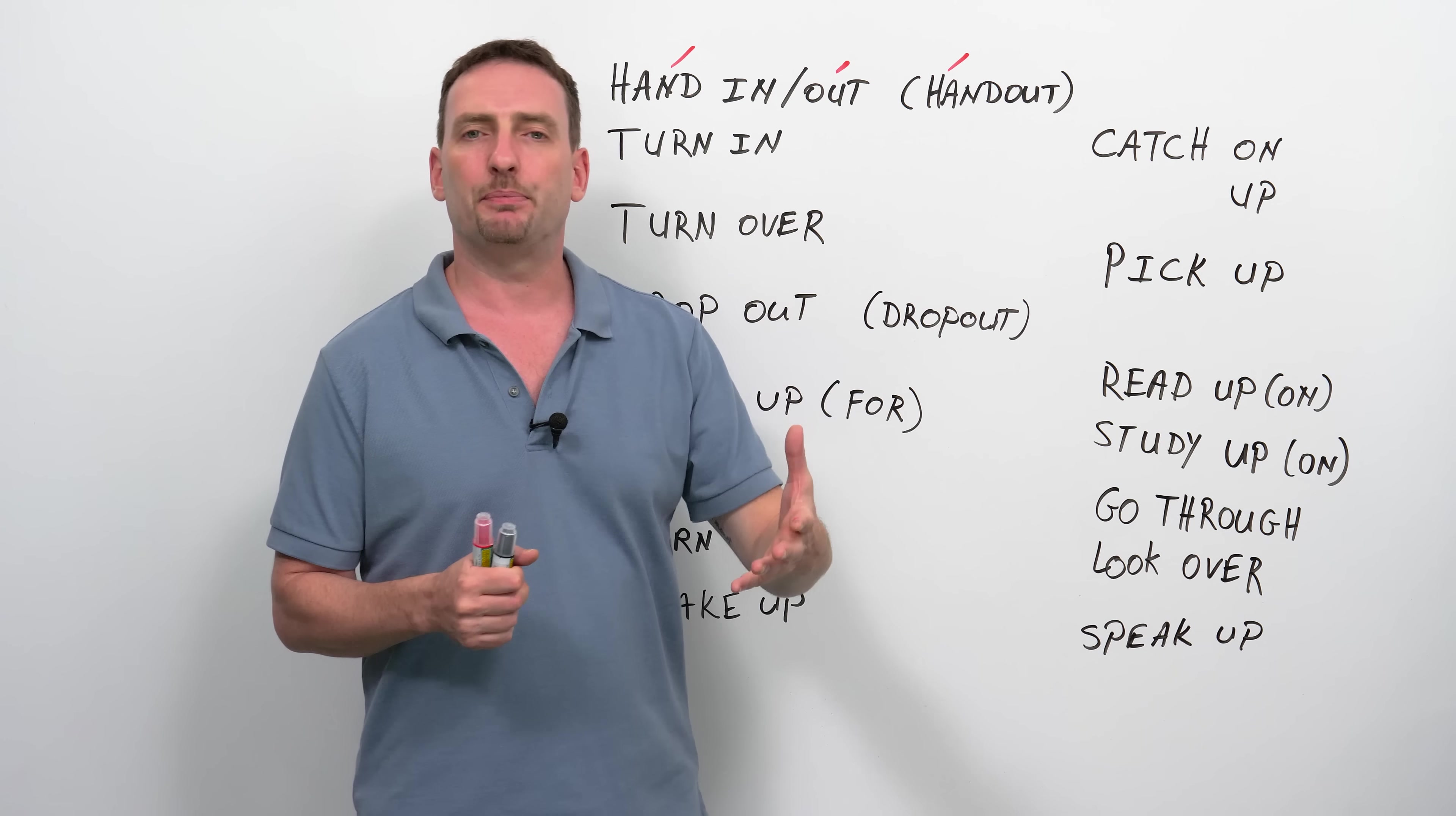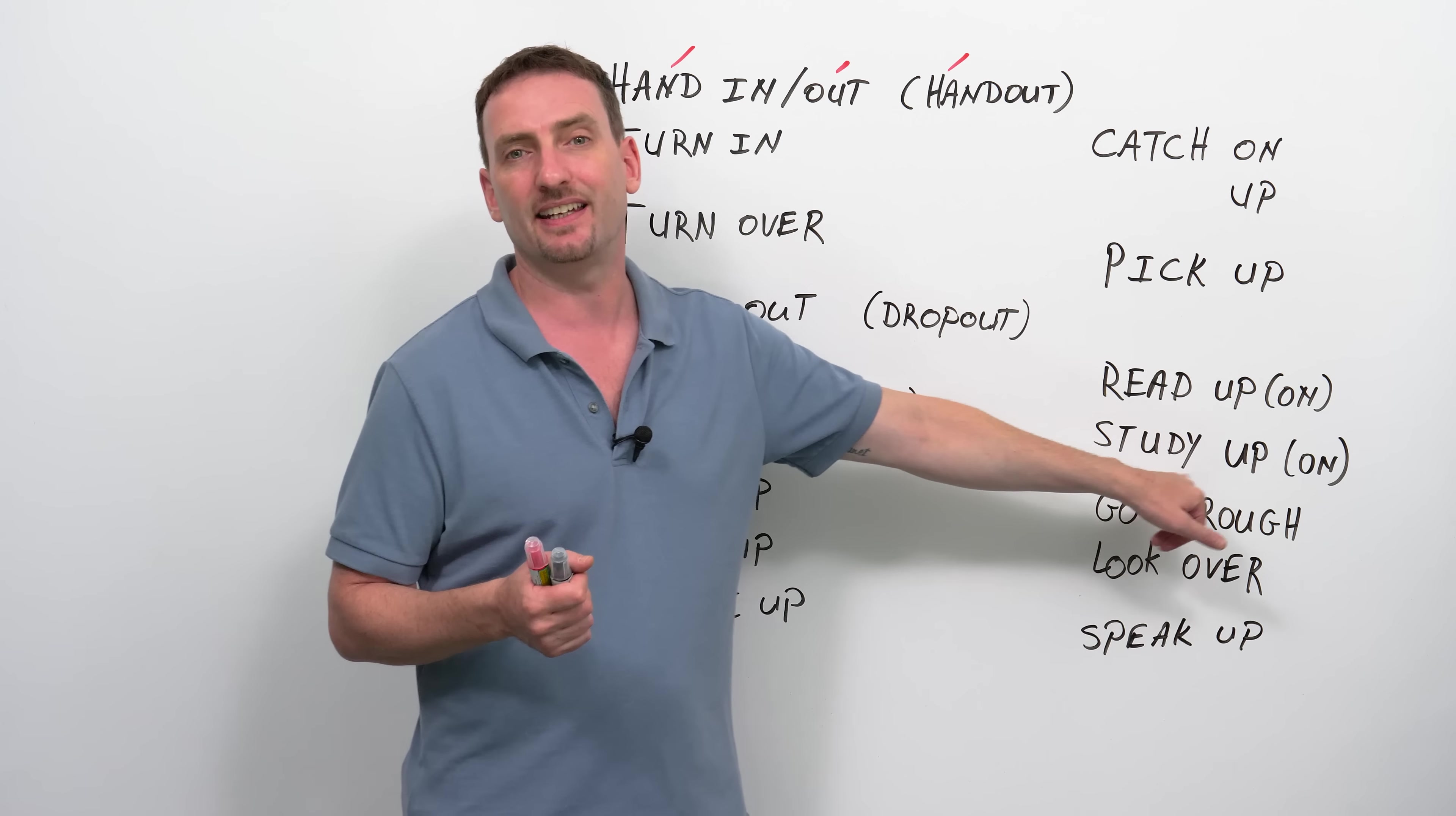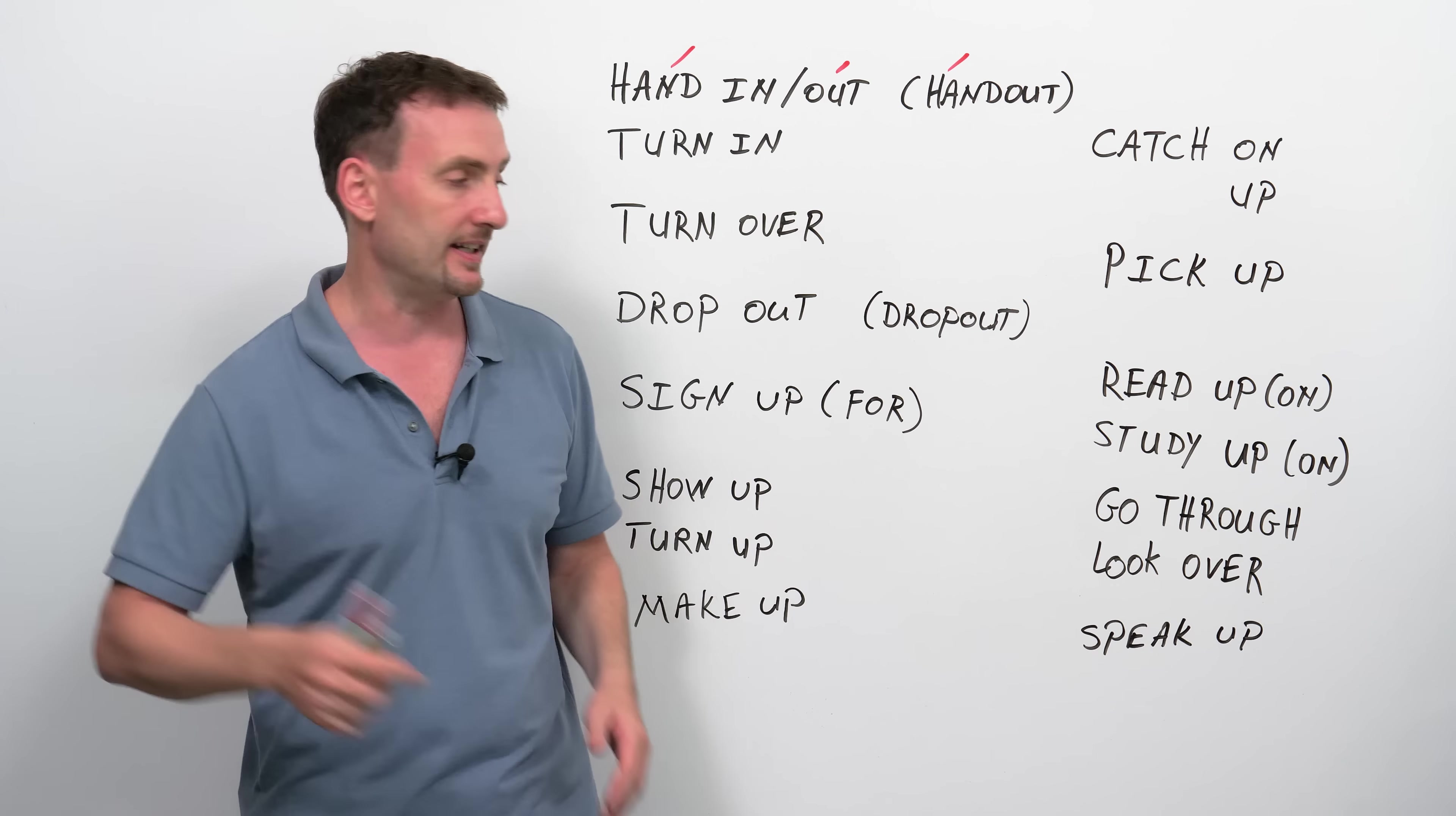Read up on. Read up on basically means do some research. If you found a topic that's very interesting to you, but you don't know very much about it, your teacher might tell you to read up on that topic. We usually use it with on, so the two prepositions. You can also say study up on. Read up on means read articles, read books about this topic. Study up on means find out about this topic. Generally, how you're going to find out about the topic is by reading things. Generally, these two things mean the same. Read up on, study up on.